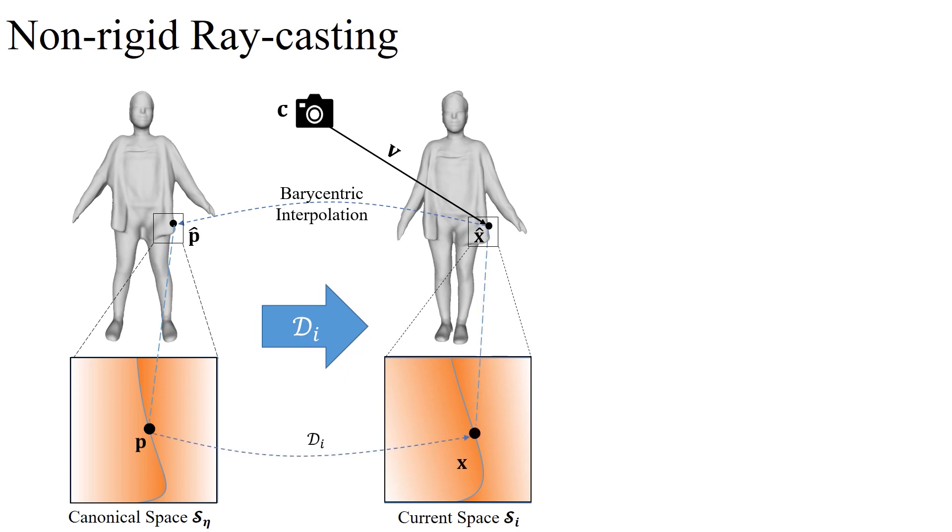Then, its deformed point X is exactly the intersection point of the ray and the current SDF surface. With the P-hat as initialization, we solve intersection P based on two losses. The first one constrains P to lie on the implicit surface and the second one restricts deformed P on the ray.